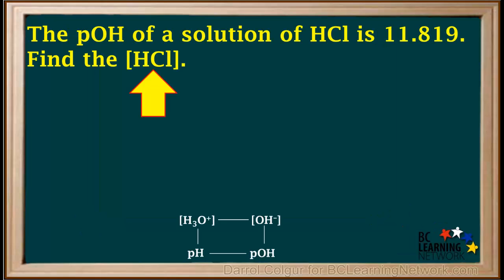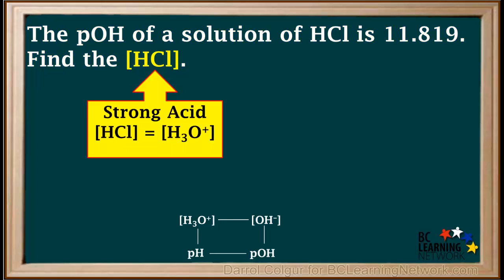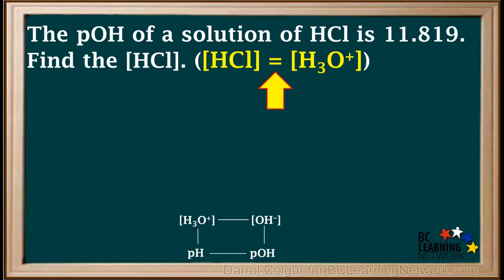We're given that the pOH of a solution of HCl is 11.819, and we're asked to find the [HCl]. We can identify HCl as a strong acid, so the concentration of HCl is the same as the concentration of hydronium, which we'll make a note of here.